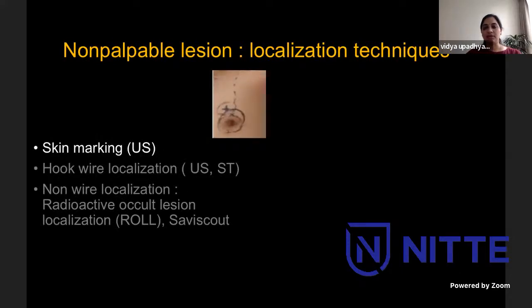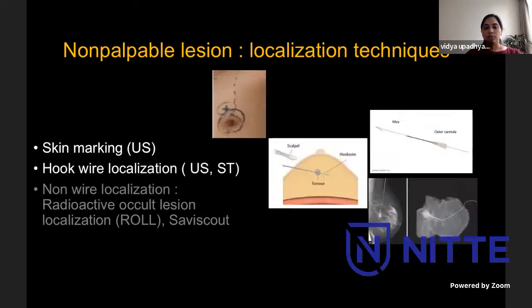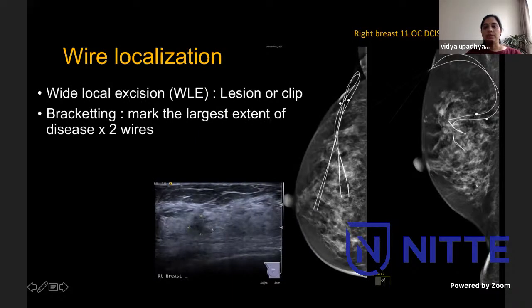Moving on to localization techniques for non-palpable lesions. The easiest approach is to identify the lesion on ultrasound and skin mark it, giving the surgeon the depth and size - the surgeon can then go in and take out the lesion. For more accuracy, hook wire localization can be done using either ultrasound or stereotactic guidance depending on lesion visibility. When the patient requires wide local excision and the lesion or clip is still identifiable, we put a wire through the clip so the surgeon can excise the lesion.